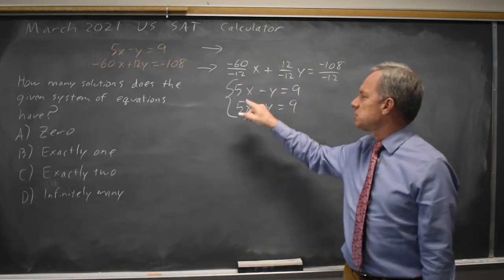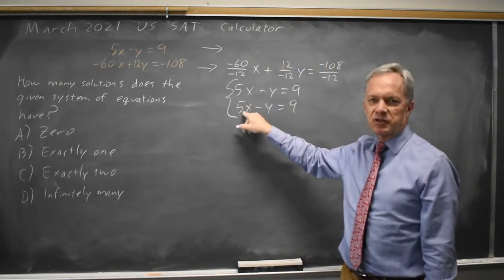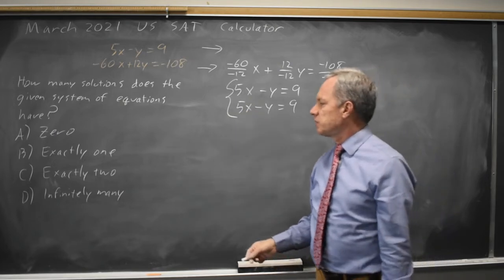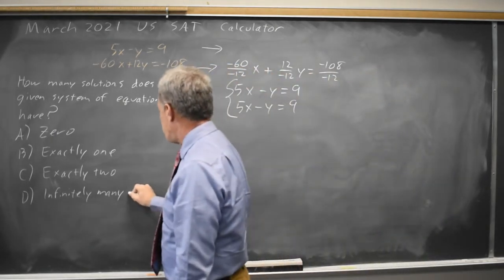Every point on the graph of the first one is also on the graph of the second one and that's infinitely many points. So there are infinitely many solutions.